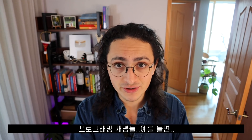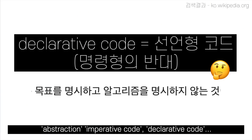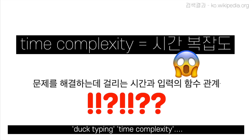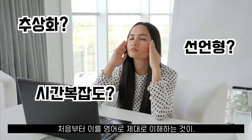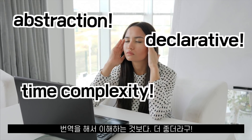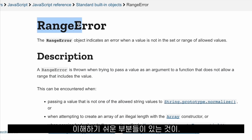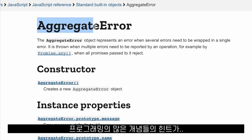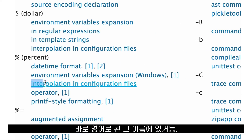If I saw programming concepts like abstractions, imperative code, declarative code, duck typing, type complexity — I realized that it was better to understand these concepts in English rather than trying to look for a translation. I really think that if you're learning to code and you do it in English, some things are actually going to be easier to understand, because most of the time the clues of what things do in programming are in the name itself.